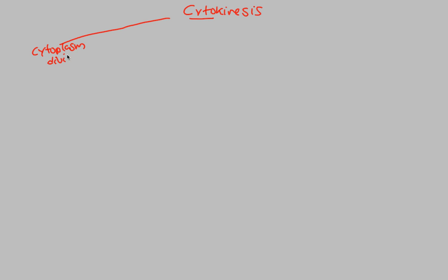If we divide the cytoplasm — if you remember from the cell biology lecture, the one about cell structure — the cytoplasm is simply the real estate of the cell. And if the real estate divides equally, then we've created two separate entities, two separate areas at which we have action, cellular function, and cellular structure. When we divide the cytoplasm, we undergo cytokinesis.